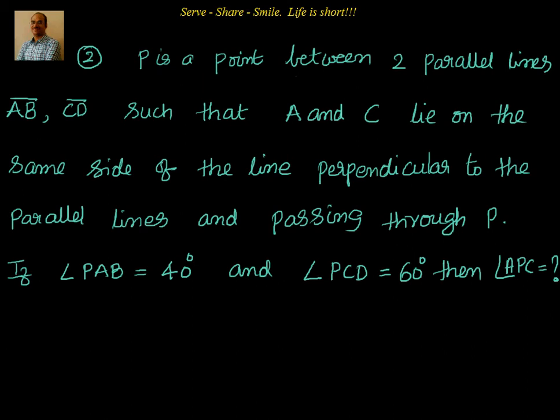Hello friends, welcome. Let's look at this problem: P is a point between two parallel lines AB and CD such that A and C lie on the same side of the line perpendicular to the parallel lines and passing through P. If angle PAB equals 40 degrees and angle PCD equals 60 degrees, then what is the angle APC?